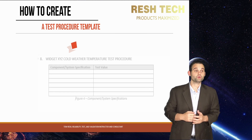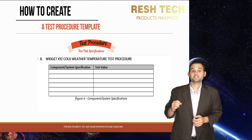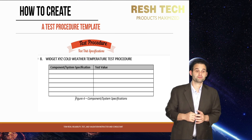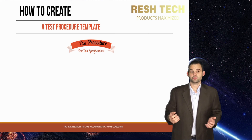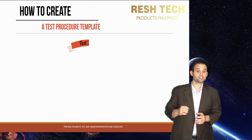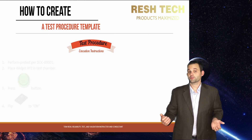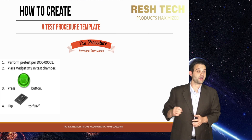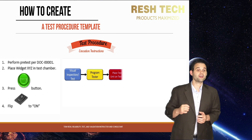The test documentation will also include a table of specifications for the part, subsystem, or system to be tested, including electrical parameters, test limits, temperature parameters and test limits, and mechanical parameters if applicable. The test document will also need a test procedure section. For the test procedure, you can either do line-by-line written instructions for each step or use a flow diagram.